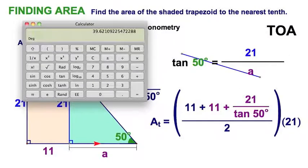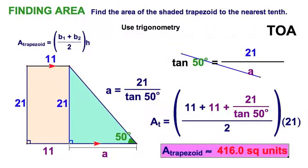That's the average of my bases, also known as the median. Now, times 21, and I've got 416.0214 to the nearest tenth. I guess that would be 416 and no tenths square units. Well done.